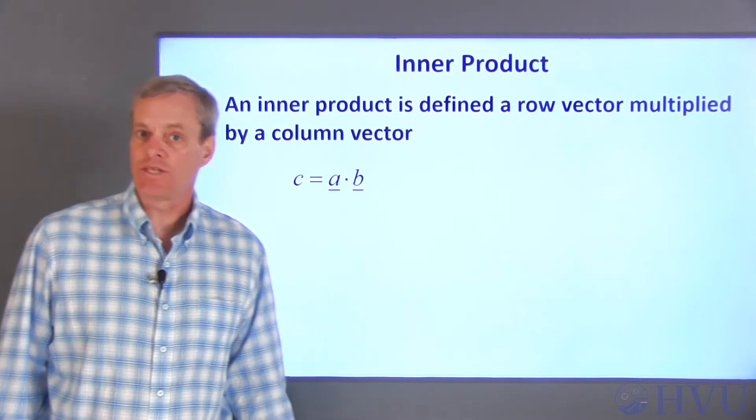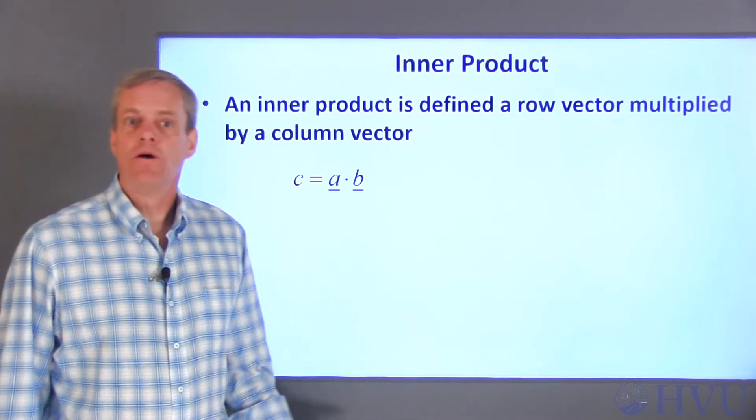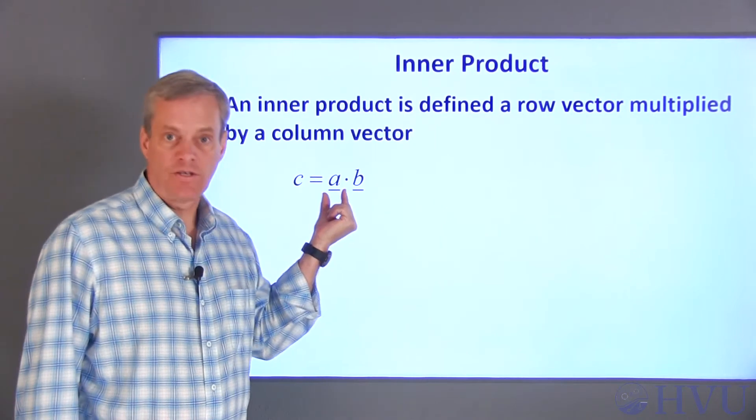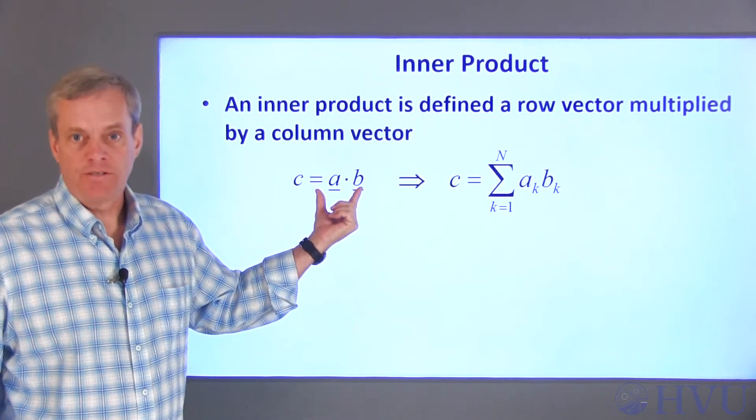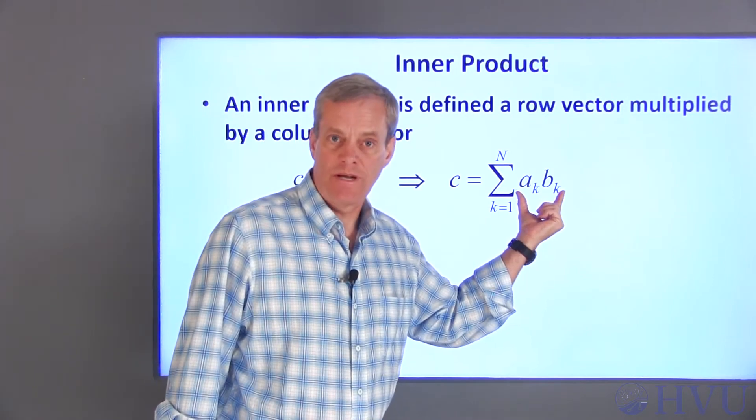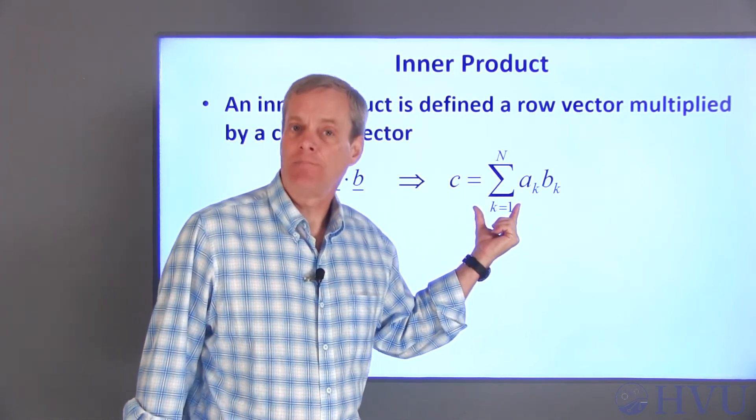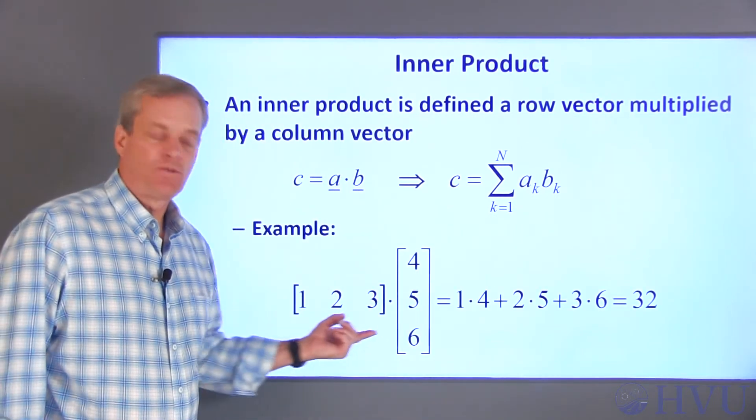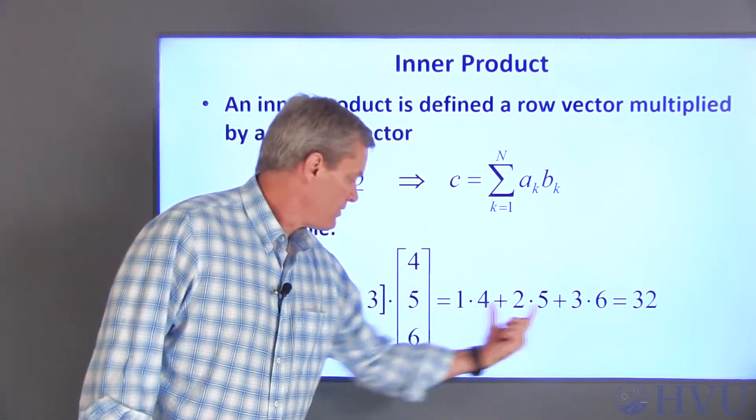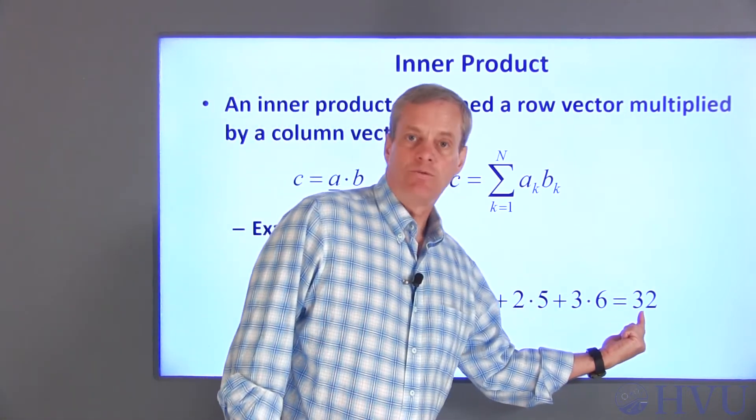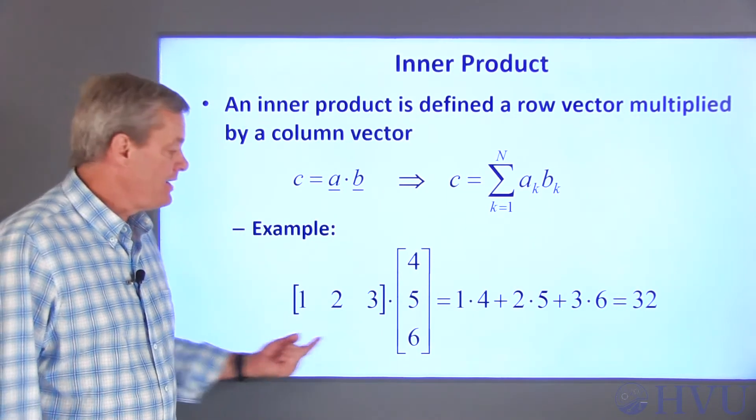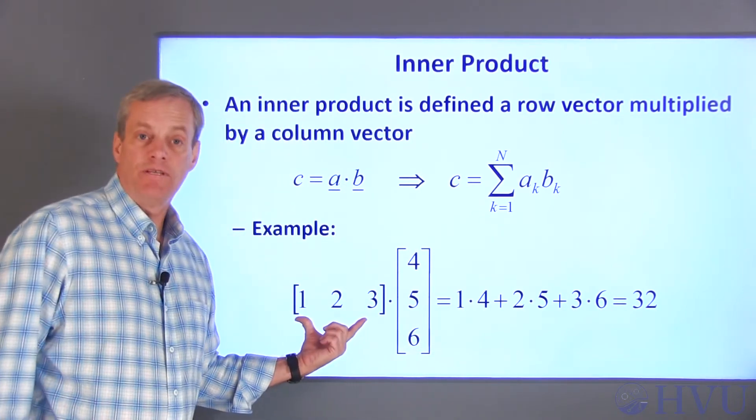Next, I'm going to talk about matrix multiplication, and things are going to start to become interesting. Multiplying two matrices relies on what is called an inner product. An inner product is defined as a row vector multiplied by a column vector. If I multiply a row vector times a column vector, I get a scalar, C. To get C, I take the product of the corresponding elements in A and B, and then add up all of those terms. For example, I want to multiply this row vector times this column vector. The result is 1 times 4 plus 2 times 5 plus 3 times 6, which is equal to 32. Notice that in order to do the inner product, the vectors have to have the same number of terms. I need a corresponding element in the vector B for every element in the vector A.